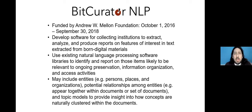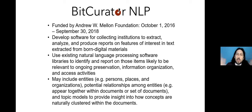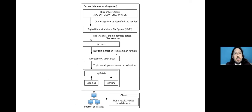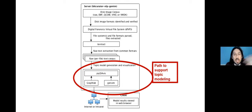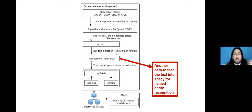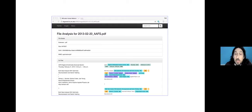BitCurator NLP was another Mellon-funded project applying natural language processing to the same set of tasks — identifying names of people, places, and organizations — to help both those caring for collections and those using them navigate content that is too difficult to approach at the individual item level. The supported workflow takes a corpus of disk images, reads their file systems, pulls files out in text form, then applies NLP tools such as topic modeling or named entity recognition.